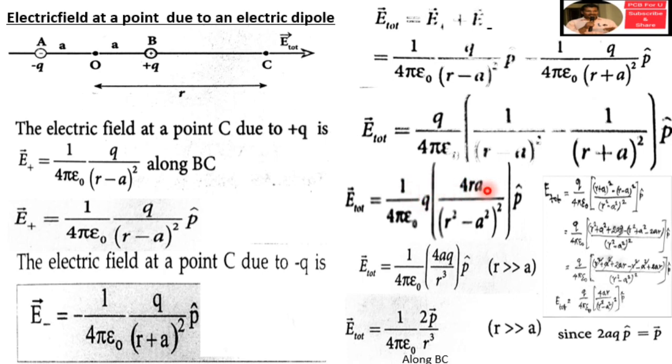Simplifying: r-squared minus a-squared terms cancel. We get plus 2er and minus 2er remaining from the expansion, and the r-squared and a-squared cross terms cancel, leaving 4er. So the numerator simplifies to 4er, giving us 1 over (r-squared minus a-squared) times the unit vector b-cap.